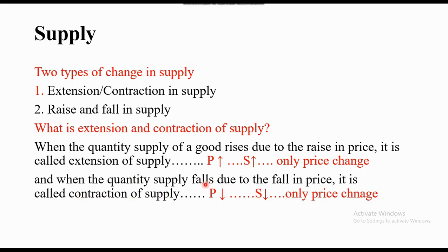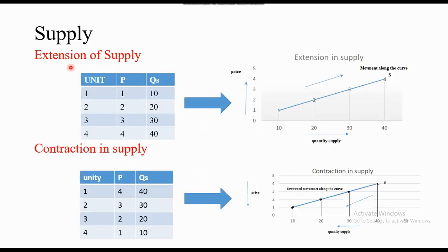Contraction means a reduction — that means the price is reduced and supply also reduces. When we look at extension of supply, both price and quantity of supply increase. There is no need to worry because both have a positive relationship. The graph showing this positive relationship has an upward slope.